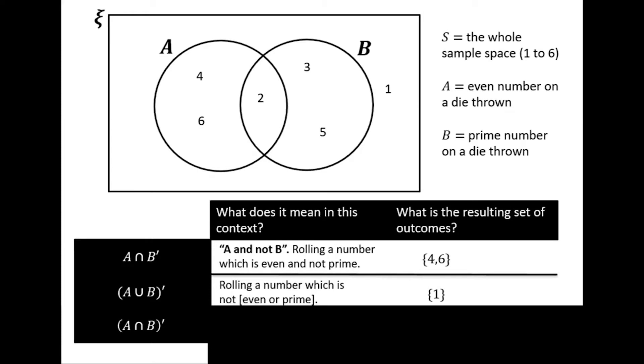And let's look at another bracketed expression. A intersection B. In this context that means an even number that is also prime, so we're back to the number two.